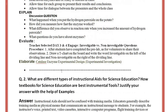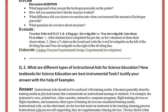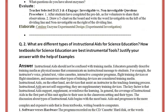Now let's look at question number 2. What are the different types of instructional aids for science education? How are textbooks for science education the best instrument tools? Justify your answer with the help of examples. Here we have to tell you about how to use instructional aids for science education and which types are best.